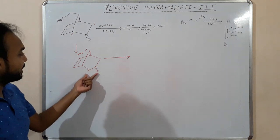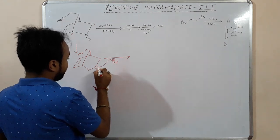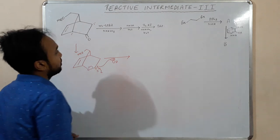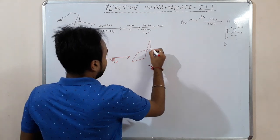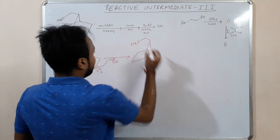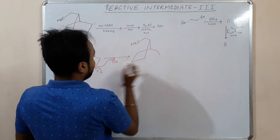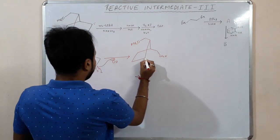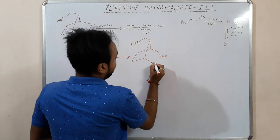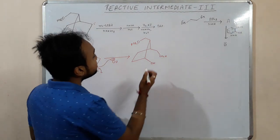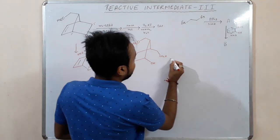Now in the second step we have given a base and water. So what the base will do - you can see the base will break this one. If you have an OH minus group attack here, we are getting this one. Here we have CO2H, here you have O minus which will take up a proton from water.